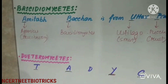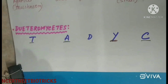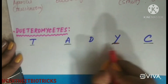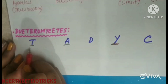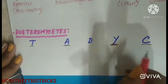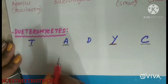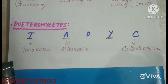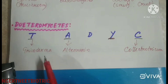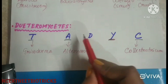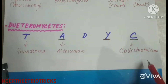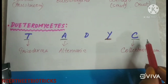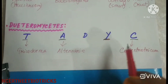The last group is Deuteromycetes, remembered as 'Taddy C' — T for Trichoderma, A for Alternaria, and C for Colletotrichum.